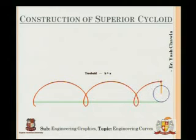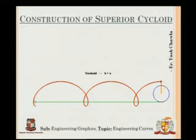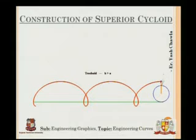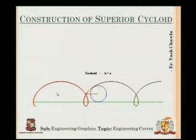Once the point goes outside the circle, it will plot a different path than what a simple cycloid actually plots. The steps would be almost the same; the only difference is that cp0 — which we used to take — would now be the radius plus the distance x from the circle to that point which is outside the circle. Let's see the animation: for a simple cycloid the curve started from the directing line because the point was on the circle, but now it becomes a superior cycloid and the point goes outside, tracing a path of this sort.